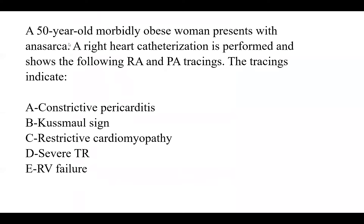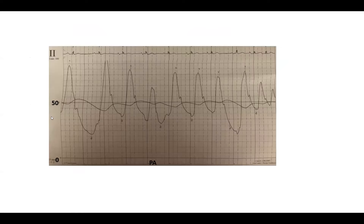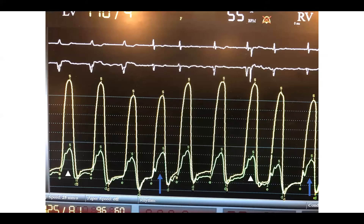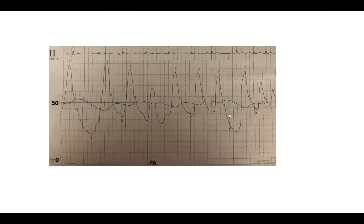Here's a new case: a 50-year-old obese woman presenting with anasarca again and JVD. A right heart catheterization is performed. This is her PA pressure, which fluctuates with respiration. Keep in mind obese people get a lot of respiratory variation because they generate deep respiratory pressures. The only time in hemodynamics we like to take a deep breath during recording is when we're recording LV and RV simultaneous pressure — that's about the only time.